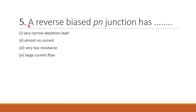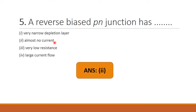Next question: A reverse-biased PN junction has — it is reverse biased, so there will be only leakage current and the resistance will be high, and the depletion width will be more. Options: very narrow depletion layer, almost no current, very low resistance, large current flow. Reverse biased condition means almost no current — option 2 is the right answer.